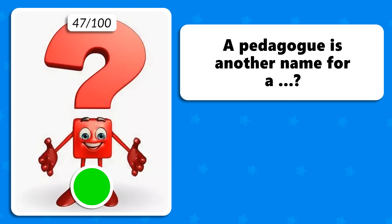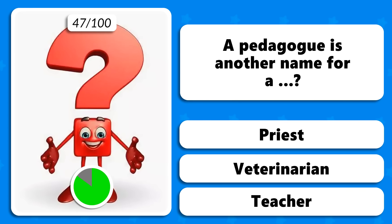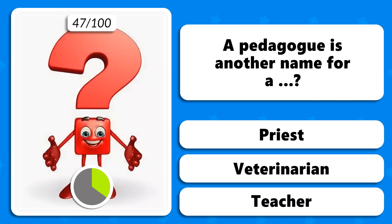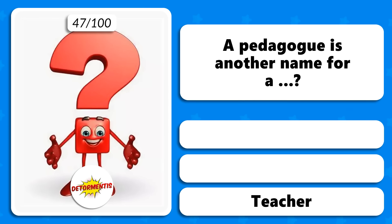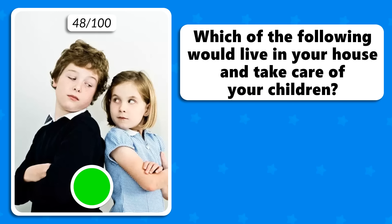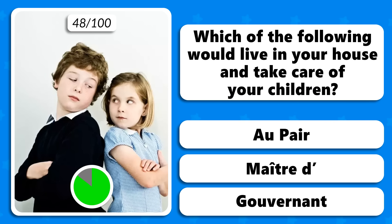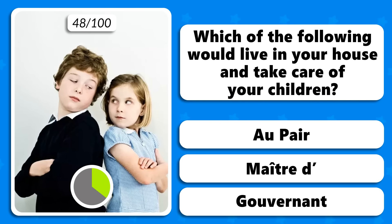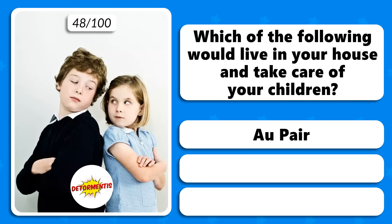A pedagogue is another name for a priest, veterinarian or teacher? It is a strict teacher. Which of the following would live in your house and take care of your children — an au pair, a maître d' or a gouvernante? The correct answer is au pair.